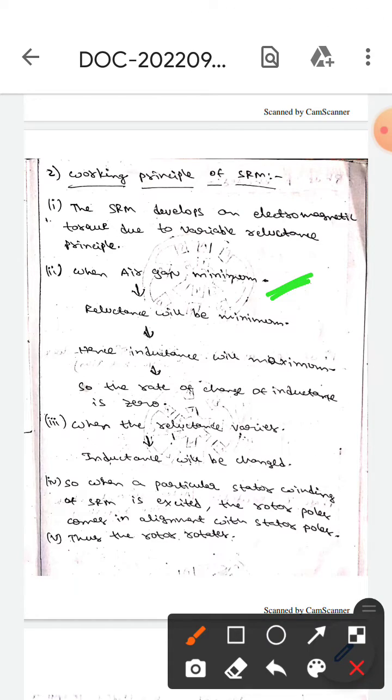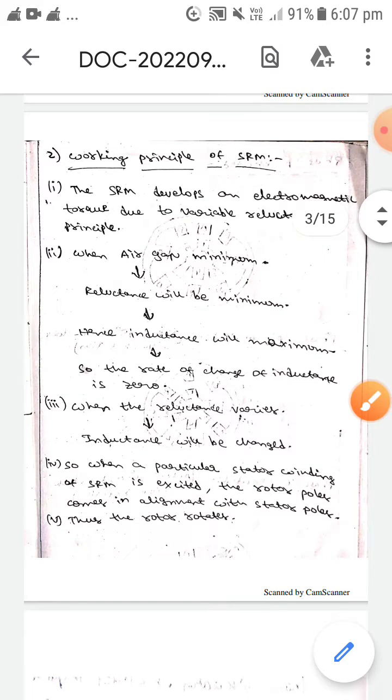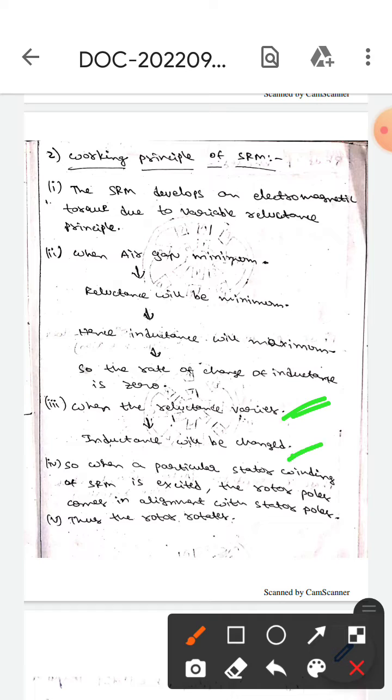When air gap is minimum, then the reluctance will be minimum, so the inductance will become maximum. Due to this, the rate of change of inductance will become zero. Here when the reluctance varies, then the inductance will also vary.